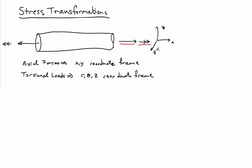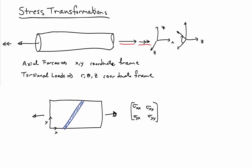For the torsional loads we would probably use a different type of coordinate system where we have the Z axis going along the length of the bar, and then we'd use some kind of polar frame in the orthogonal direction — some angle and some radial orientation. We would have the stresses in this Cartesian XYZ frame, but also the stresses from the torsional loads in the polar frame. If we want to combine them to determine the total state of stress, we're going to have to transform the stresses from one coordinate frame to another to get a sensible result.